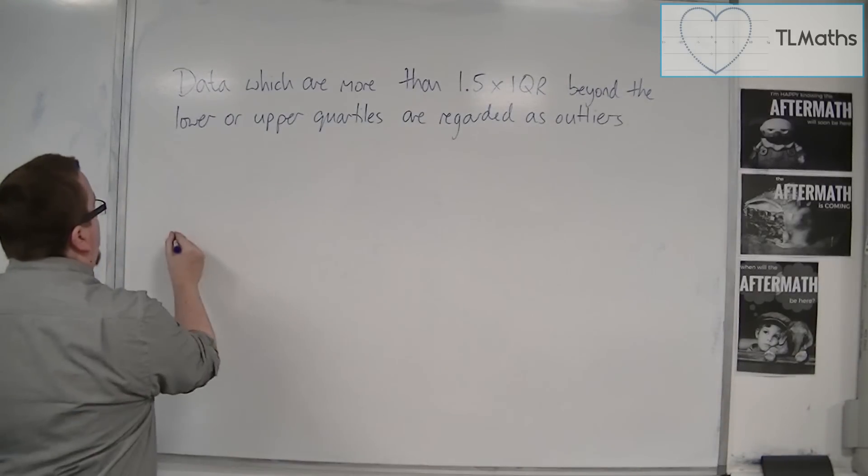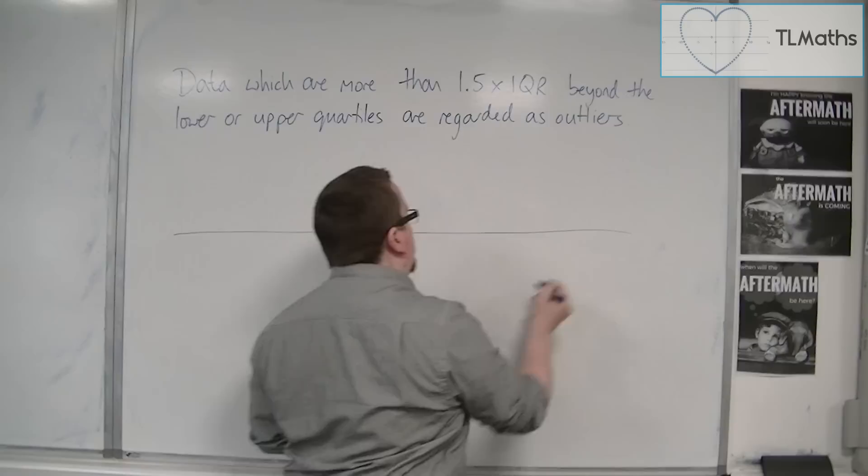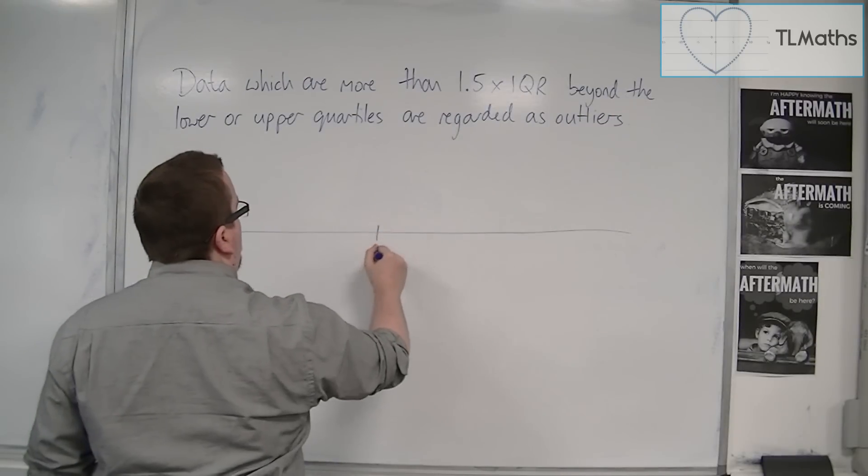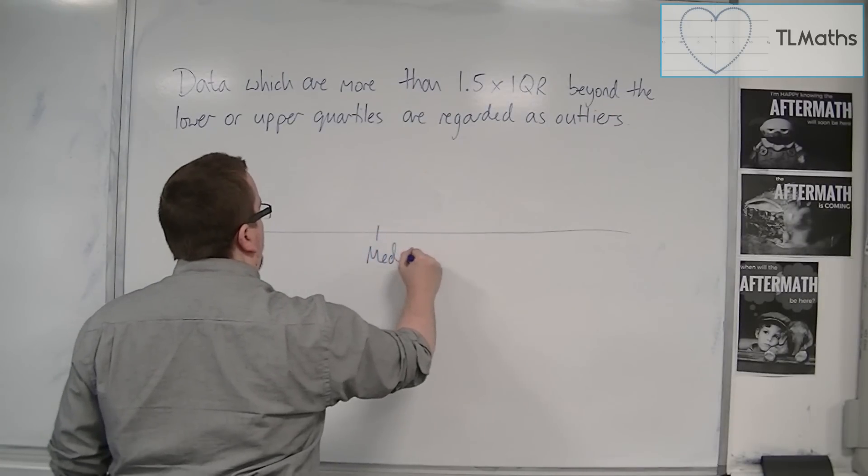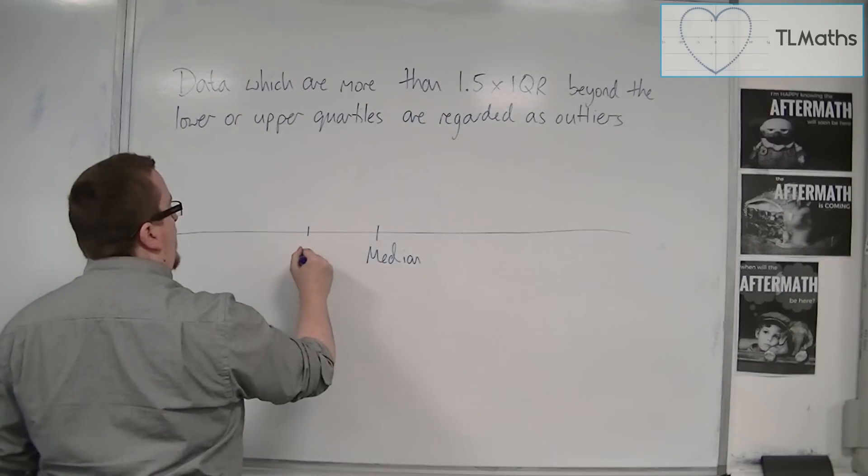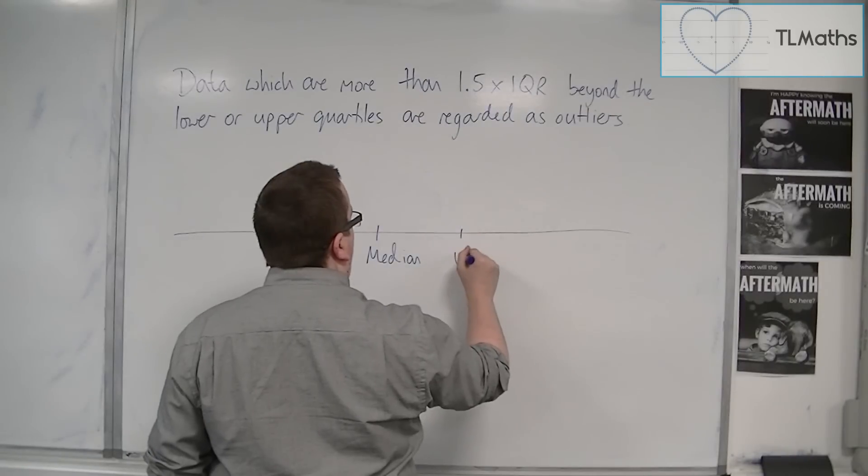So think of this as a number line, and here is your median value. Here's the lower quartile, and here is the upper quartile.